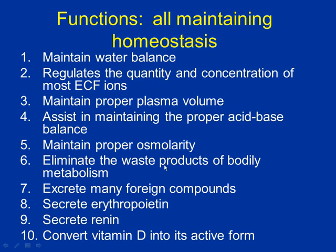Number six: eliminate waste products of bodily metabolism — things like urea, ammonia, acetone. When you break down proteins, lipids, and carbs, you get these metabolites. Number seven: excrete foreign compounds like penicillin. Anything your body doesn't like, even if it's not harmful, your body pushes it to the kidney. Your body absolutely hates penicillin — old school penicillin. Now we've modified it so it stays in the body longer.